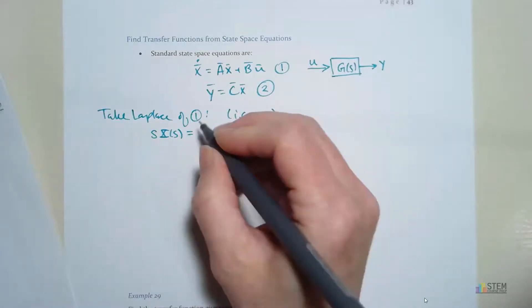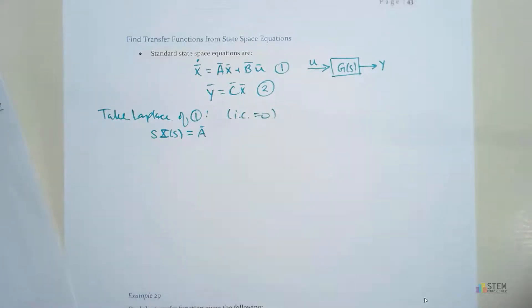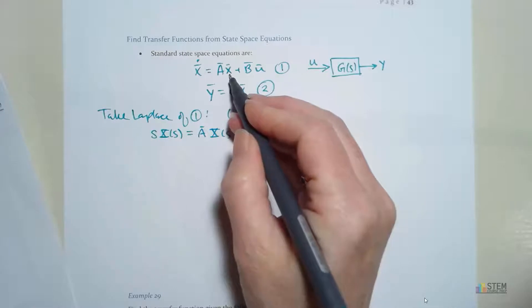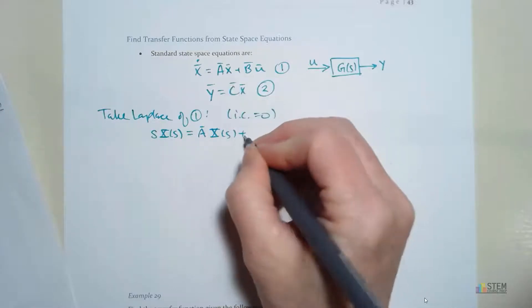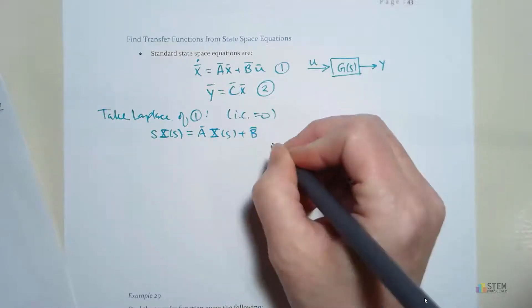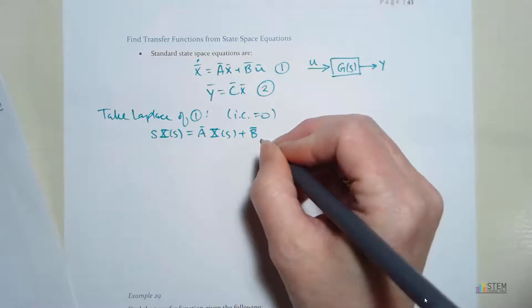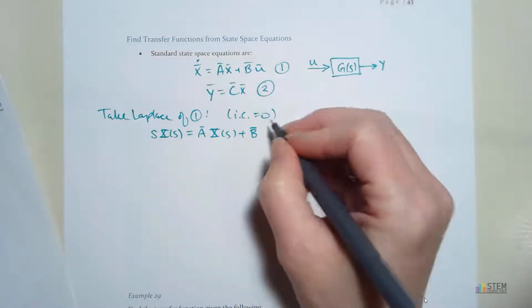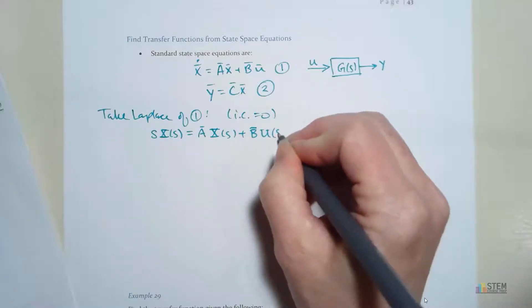That's going to equal A because A is just going to be full of constants. Times X of S because we're taking the Laplace of X plus B. That's got constants in it also. And then we've got U here. Take the Laplace of that, you get a capital U of S.